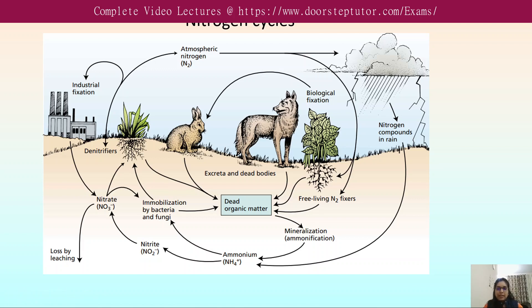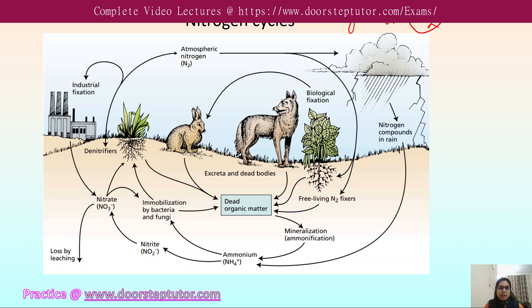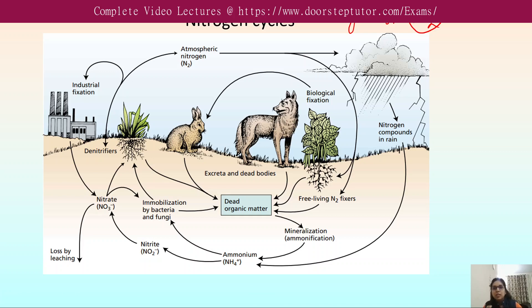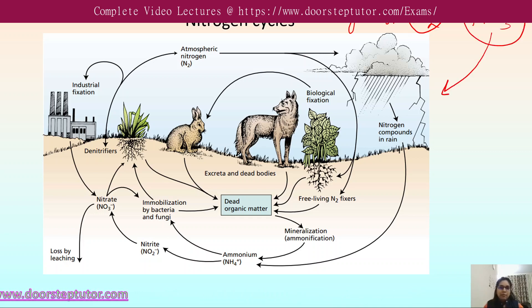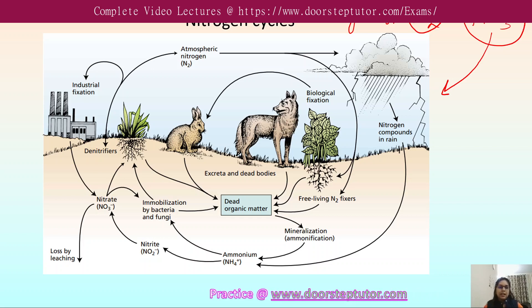In the nitrogen cycle, nitrogen changes from its gaseous phase — N2 — to a reduced form before being incorporated into organic compounds. The N2 form is not readily available to plants or animals, so it must first be converted into the reduced form, which is nitrate. That nitrate can then be taken up by animals or plants and utilized by all cells, requiring incorporation into organic compounds in living organisms.